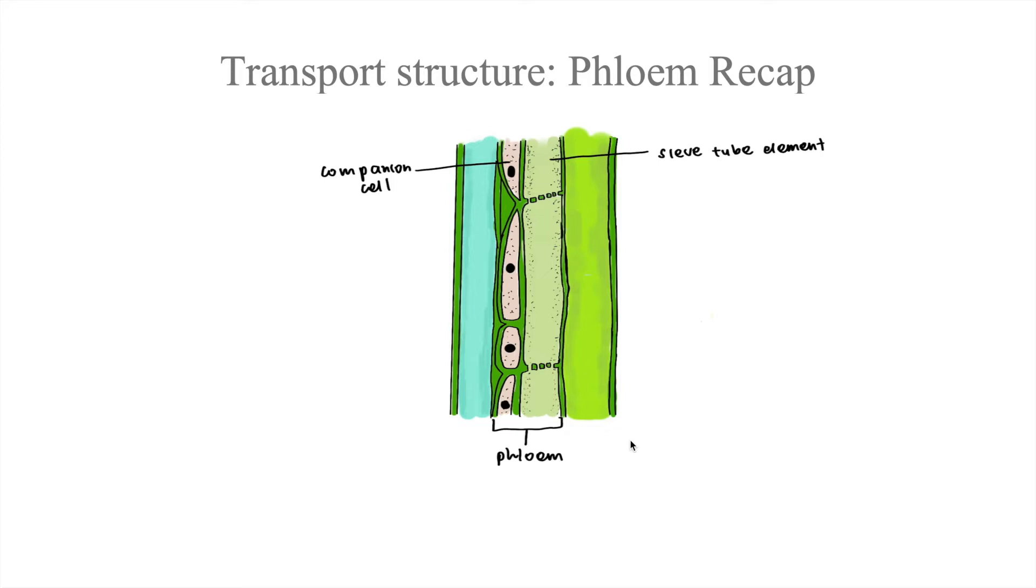Do you remember what's the difference between the xylem and the phloem? We know that the xylem is dead, whereas the phloem is alive due to its companion cells. Movement of water and mineral salts in the xylem is unidirectional, from the roots to the leaves.